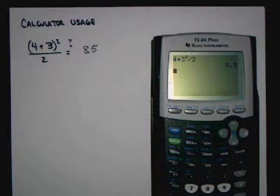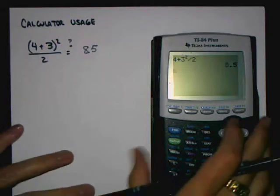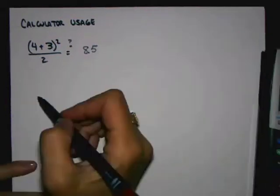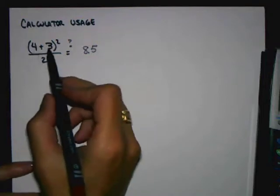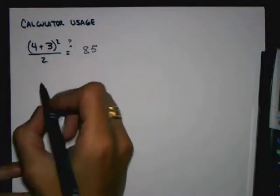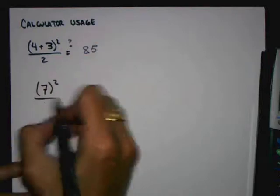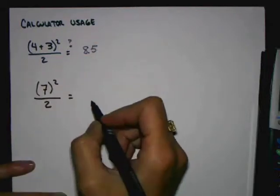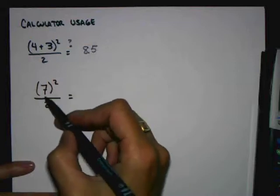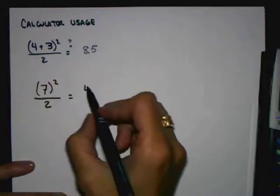Let's go through this problem for a minute by hand, without the calculator, and see what we find. Order of operations tells us that we need to evaluate the expression inside the parentheses first. 4 plus 3 is 7. Then, order of operations tells us we need to apply exponents. 7 squared is 49.